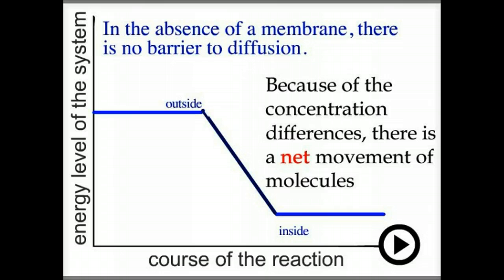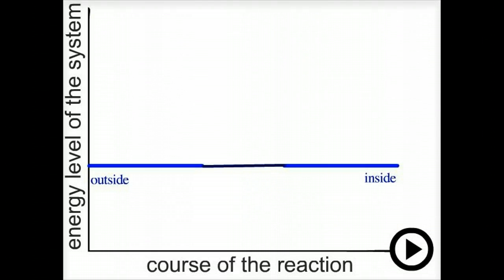In the absence of a membrane, there is no barrier to diffusion. Because of the concentration differences, there will be a net movement of molecules from outside to inside. The reaction would continue until the concentration outside is equal to the concentration inside. This is the equilibrium state.